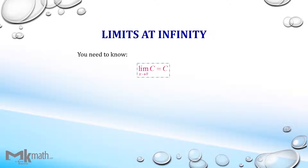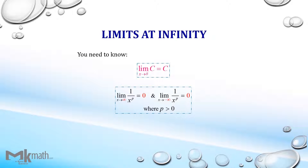The limit of a constant is the constant. If the denominator gets very large, i.e. infinity, then the limit should be zero.